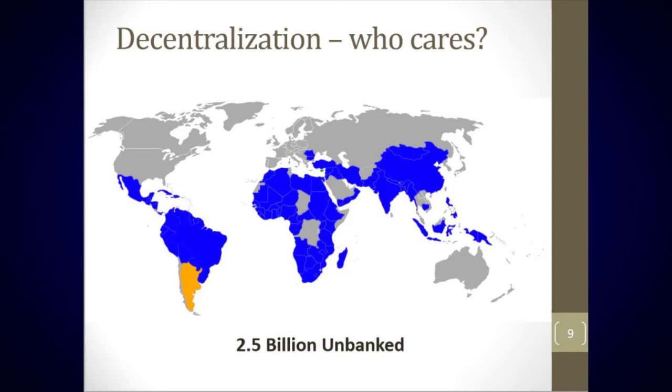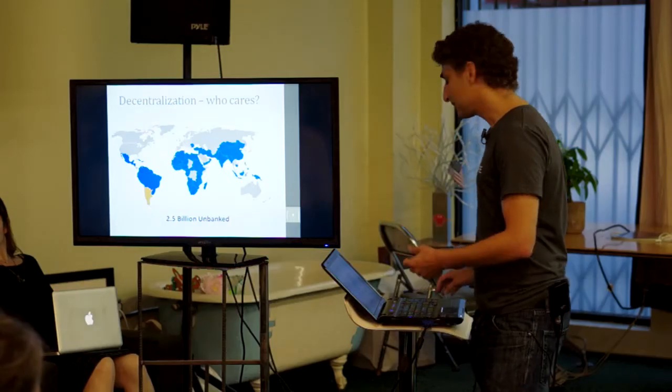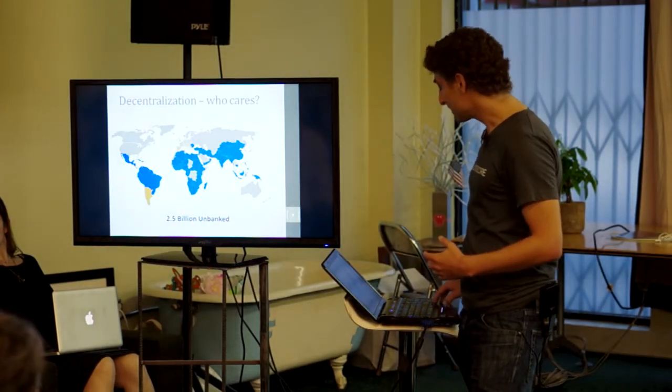Many of these people are in countries where their governments are corrupt, the financial institutions are corrupt. They can't trust anybody but the people they know in their community.